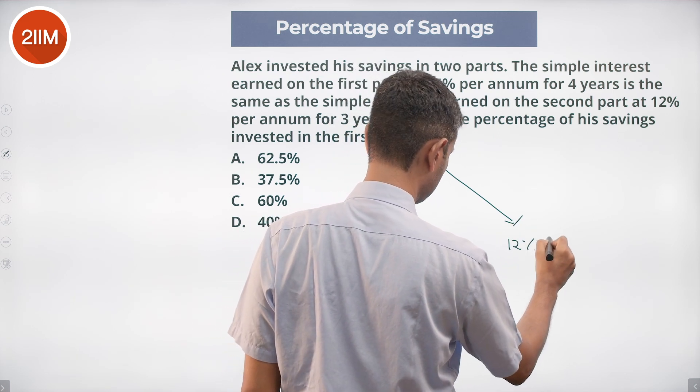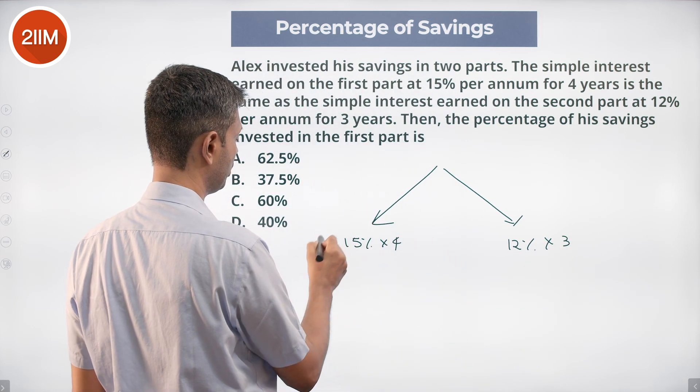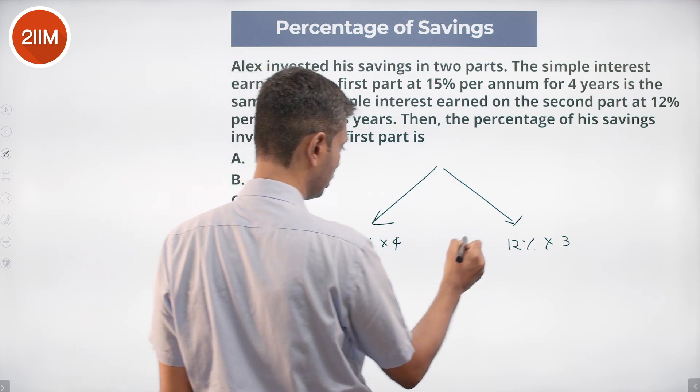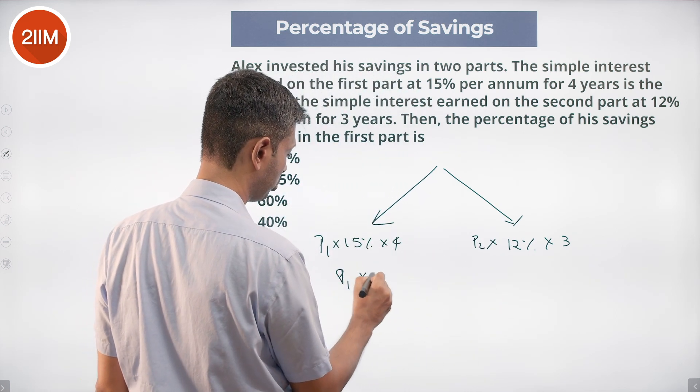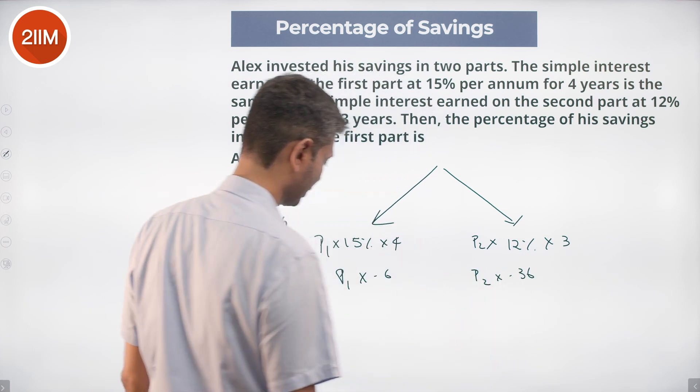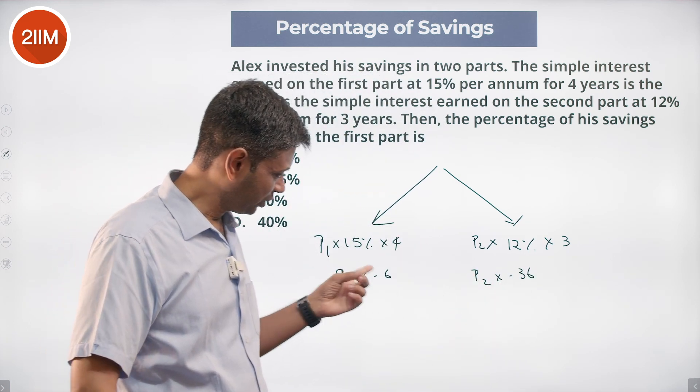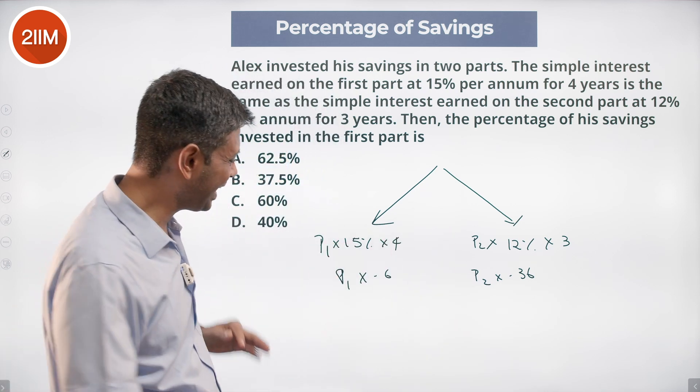So principle one into this equals principle two into this. P1 into 0.6 equals P2 into 0.36. This into 60 is that into 36. This into 5 is 3, or the ratio of the...